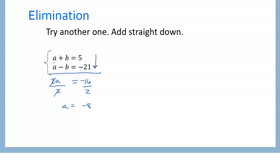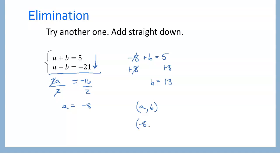Now to get our b value, we take that negative 8 and plug it back into one of these original equations: negative 8 plus b equals 5. We add 8 to both sides to get rid of it, and we get b equals 13. So written as an ordered pair, a, b — in alphabetical order — the answer is negative 8, 13.